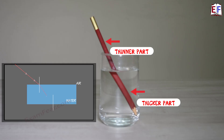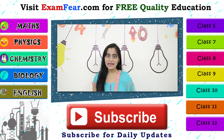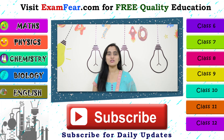So it is simply the concept of bending of light from water to air which makes a pencil look fatter and broken. I hope you liked the video — please like and share the video, and subscribe to our channel. Thank you.